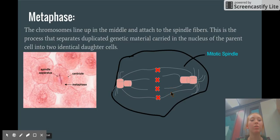Metaphase. The chromosomes line up in the middle and attach to the spindle fibers. This is the process that separates duplicated genetic material carried in the nucleus of the parent cell into two identical daughter cells.